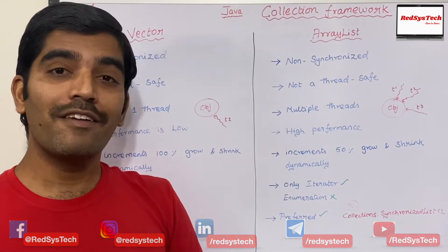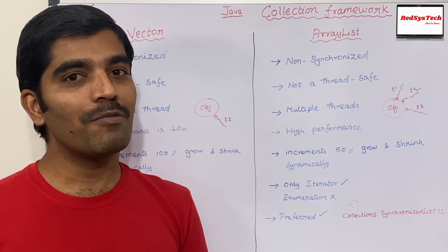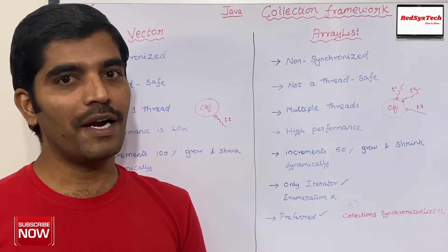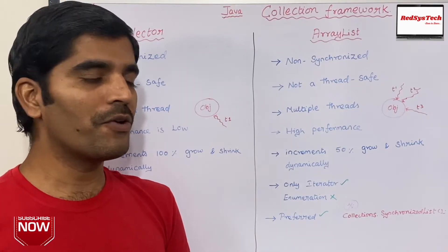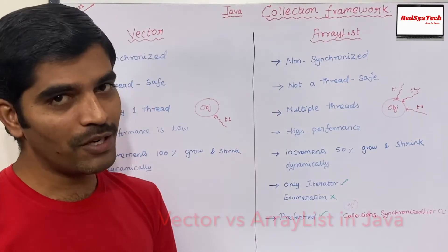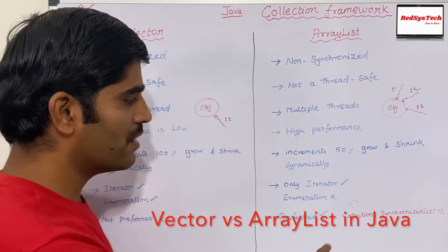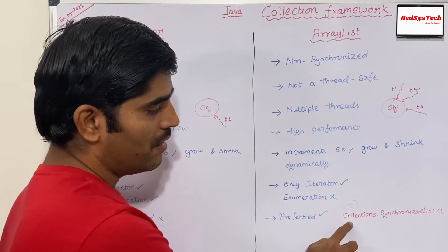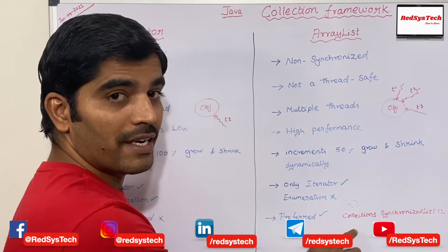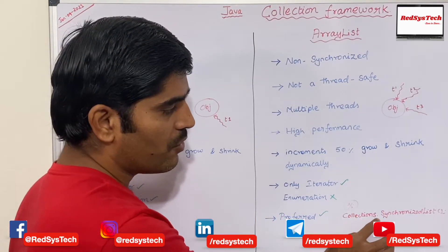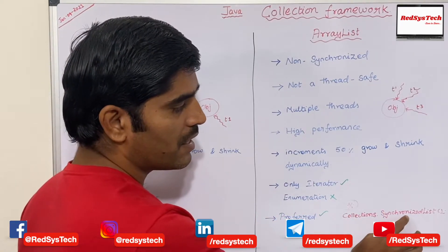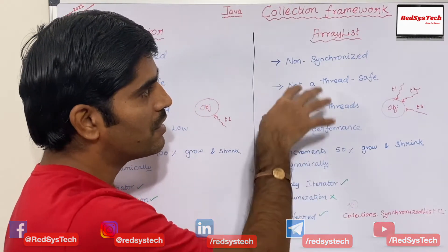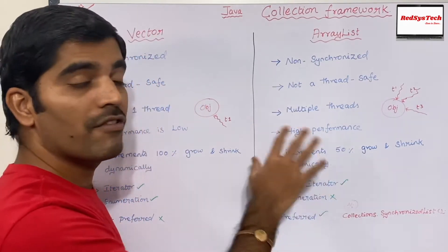But if your requirement says you want to implement some thread safe mechanism, you can definitely do it with the help of the Collections utility class. There is a class called Collections, and it has a method called synchronizedList. Using this, you can get the synchronized version of ArrayList.